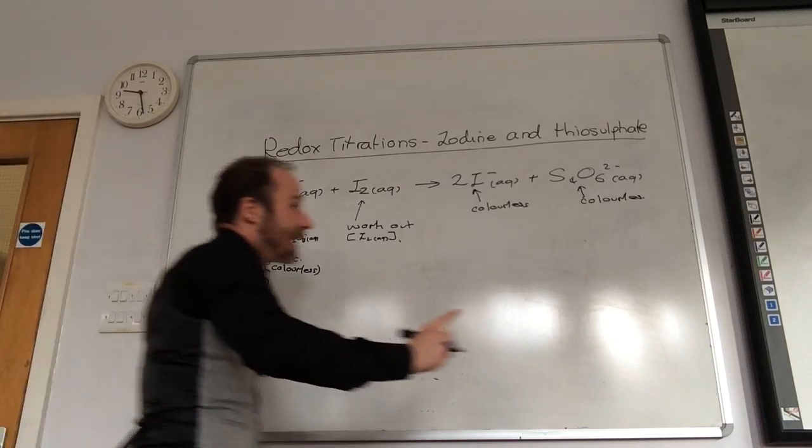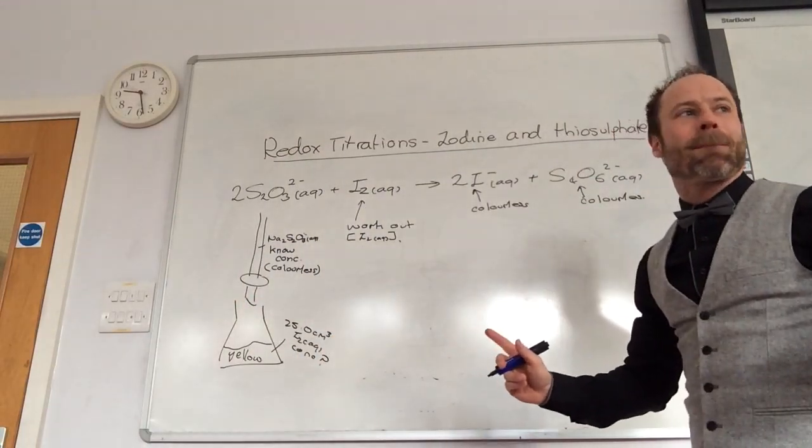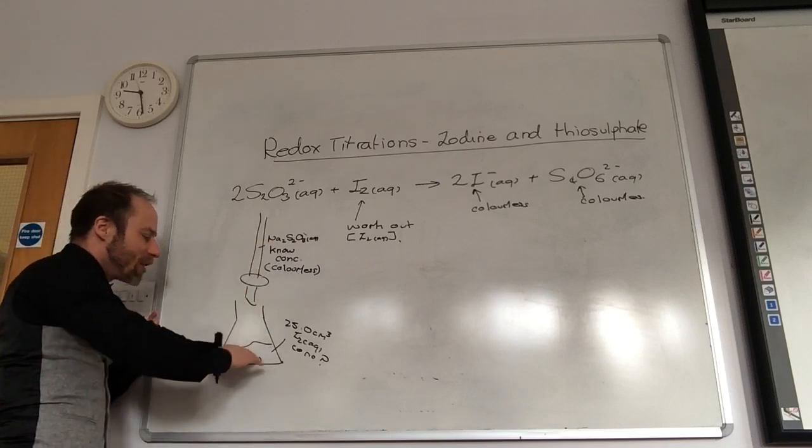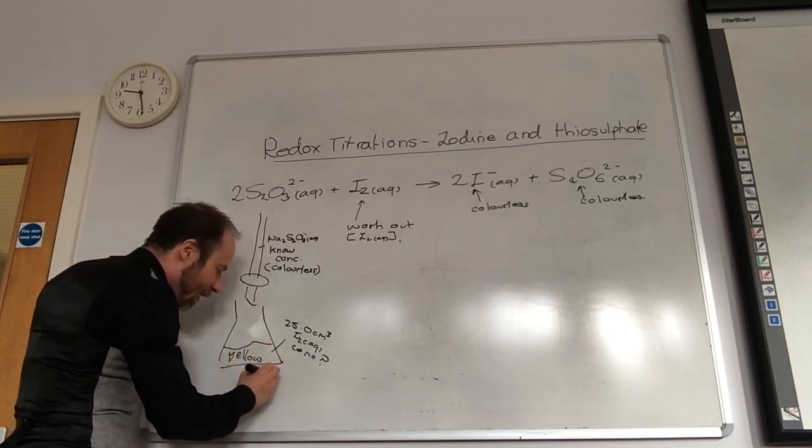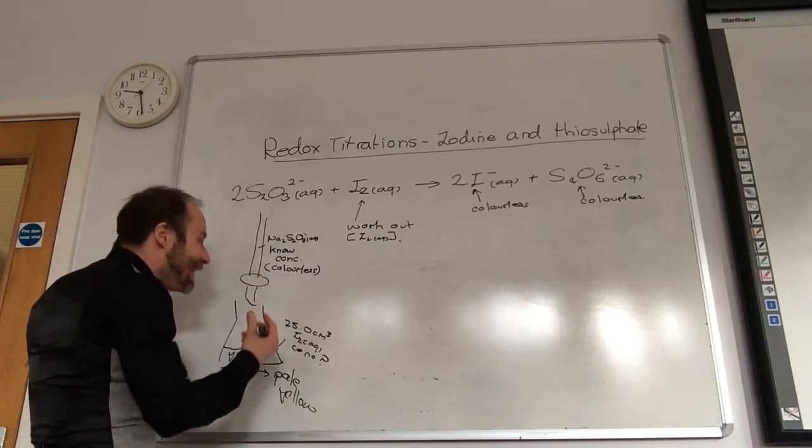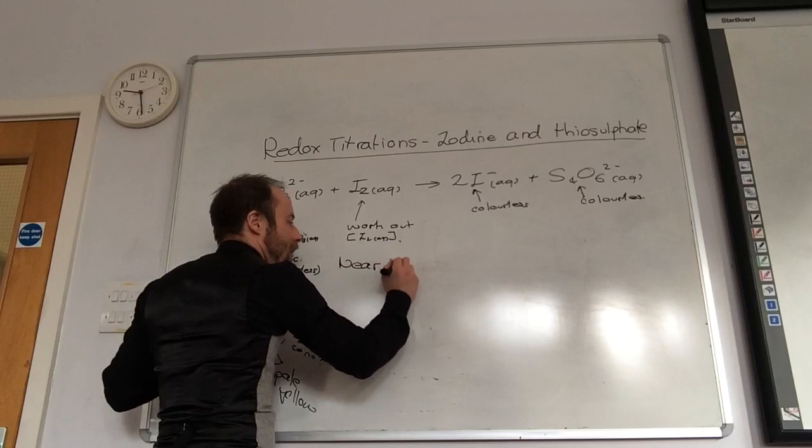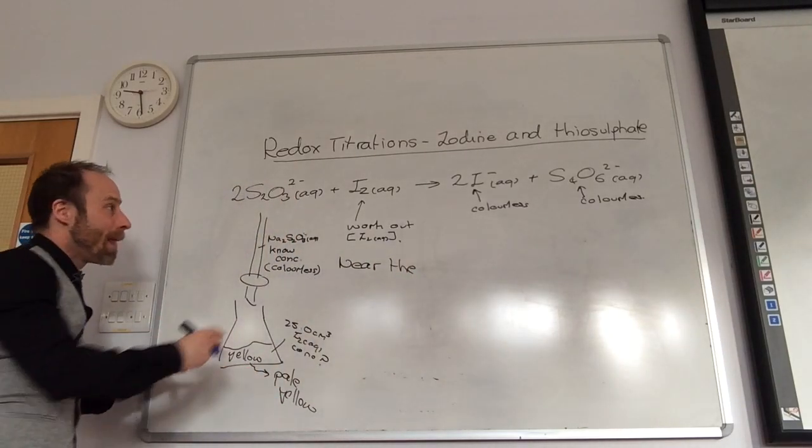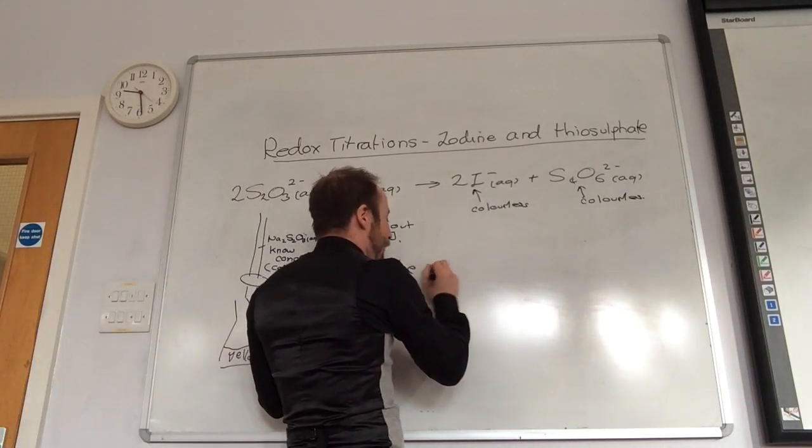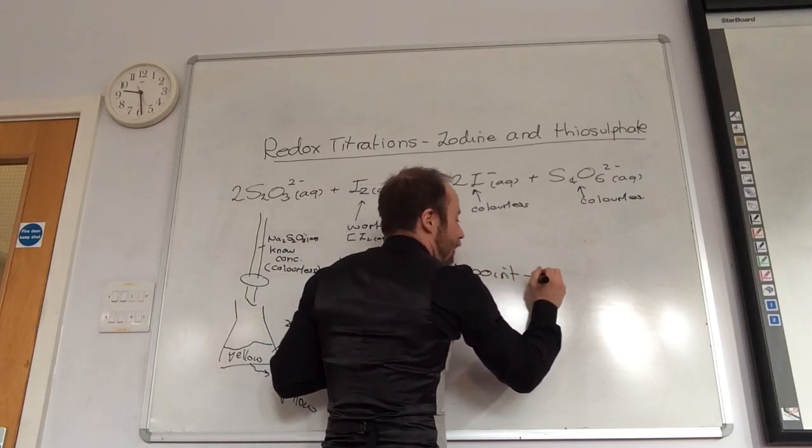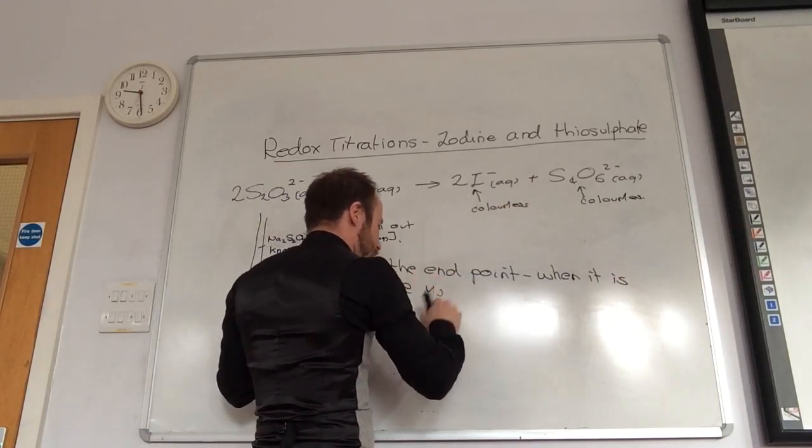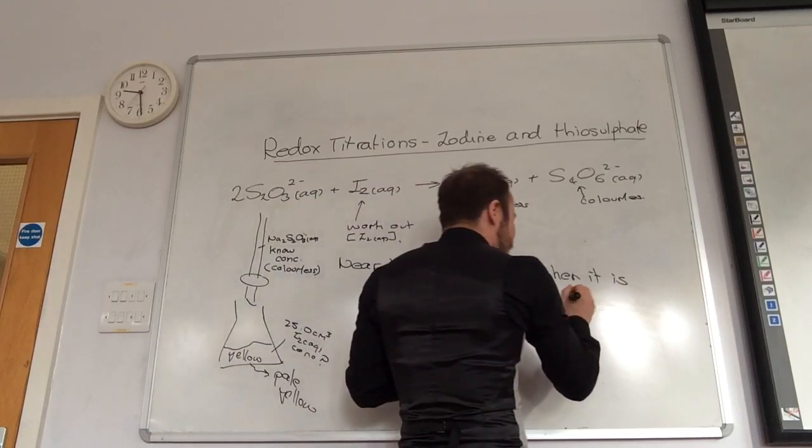Biologists, what chemical detects iodine? Starch, yes. Brilliant. So what you do is you start the titration off, this gets yellow, and then it ends up being like a pale yellow color. When it's really pale yellow, near the end point, when it is pale yellow, you add starch.